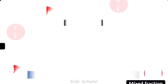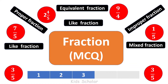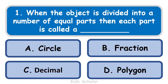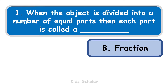Today's topic is MCQ on Fraction. The first question is: when an object is divided into a number of equal parts, then each part is called a what? The options are circle, fraction, decimal, or polygon. The correct answer for this question is fraction.